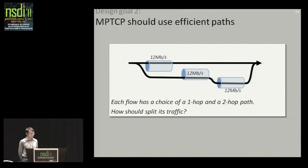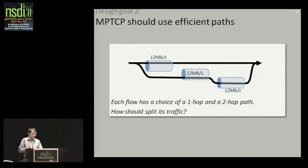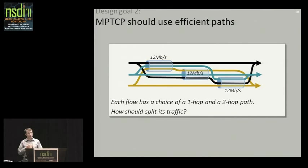Design goal two is much more interesting. Here's a simple topology with three links, each 12 megabits per second, with one multipath flow that has a choice of a one-hop path or a two-hop path. I want to ask: how should it split its traffic? Let me make it harder by adding in another flow with the same choice, and for symmetry, a third flow. So we have three flows, each with a choice of one-hop or two-hop path. How should multipath traffic split itself over the paths available?